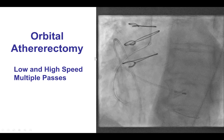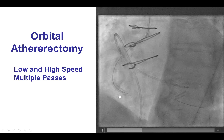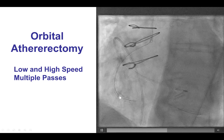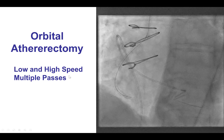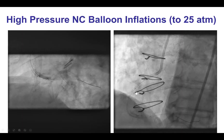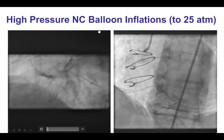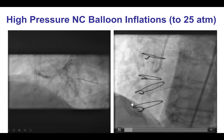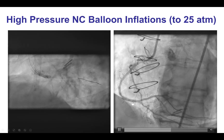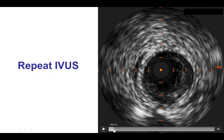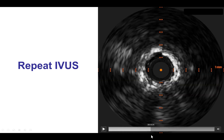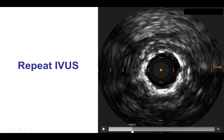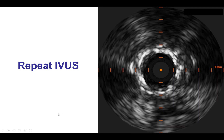A recent paper by Carl Alasved has shown that orbital atherectomy can be useful in such lesions with 95% success. We decided to use orbital atherectomy, performed at both low and high speed with multiple passes, followed by high-pressure balloon inflations. Angiographically, this looked much better, and for a moment we thought we had successfully expanded the lesion. But IVUS showed the area of under expansion was actually unchanged, although expansion was much better distally and proximally.